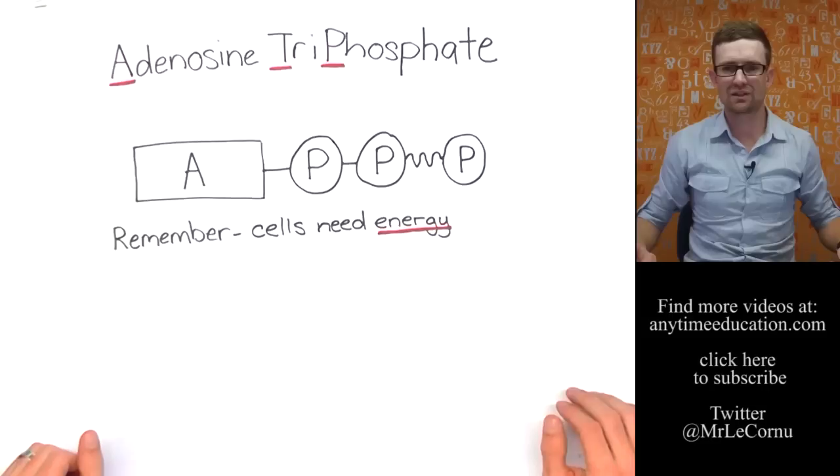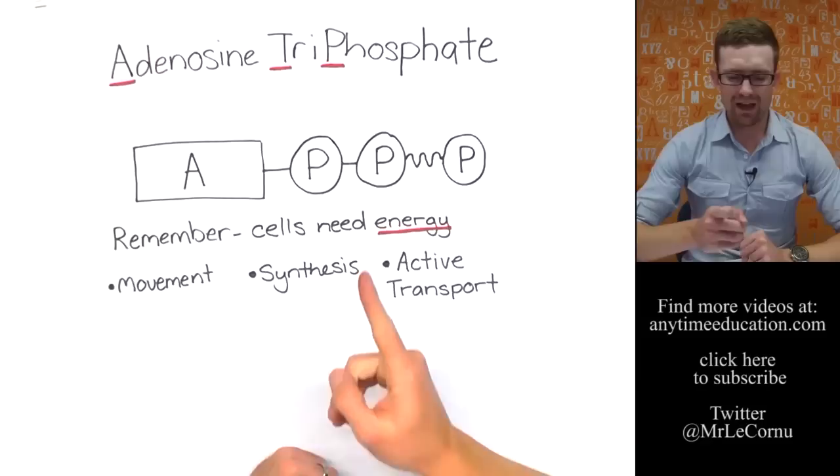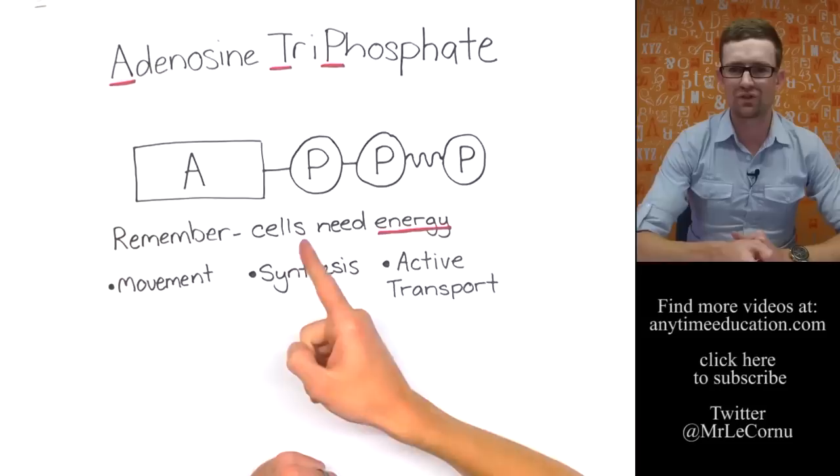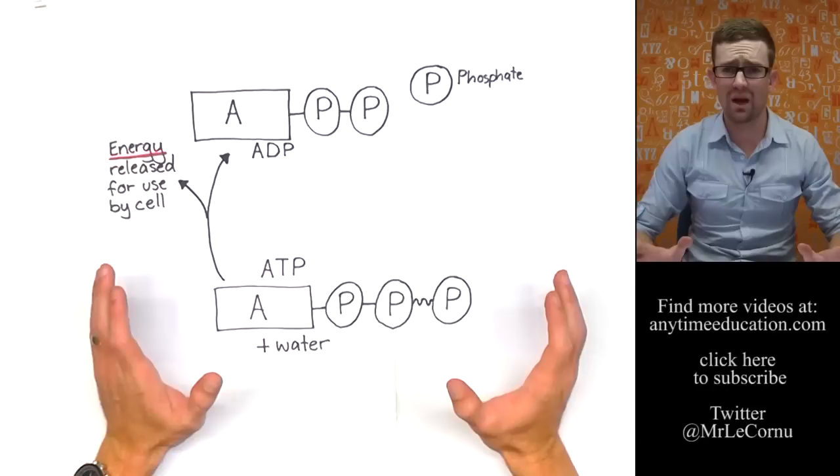Now remember, cells need energy to survive and they need energy for things like movement and synthesis and active transport. So ATP enables cells to do those things because when it's converted into ADP, the energy that's released can allow cells to do those jobs.